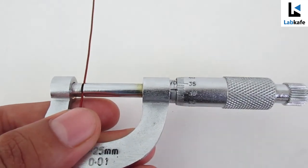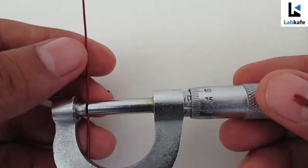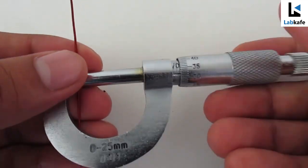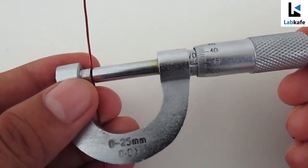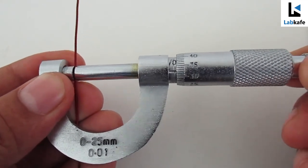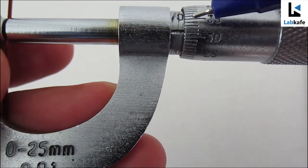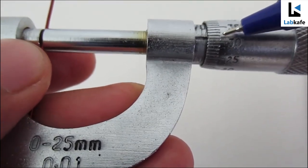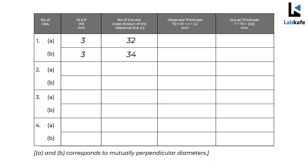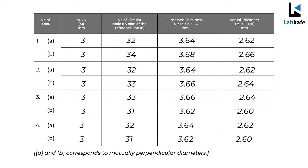Now we will rotate the wire 90 degrees with respect to its previous position and gently rotate the ratchet until we hear another click sound. The main scale reading is 3 and the circular scale reading is 34. This is one set of data. We have to collect another 4 to 5 sets of data in different places of the wire.